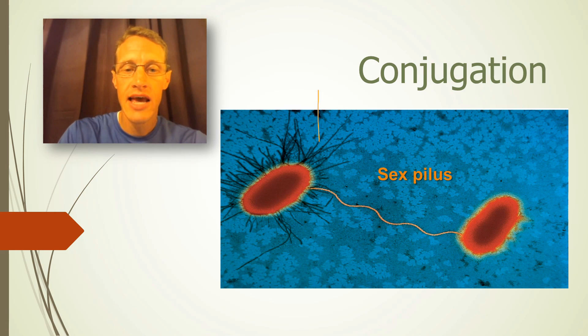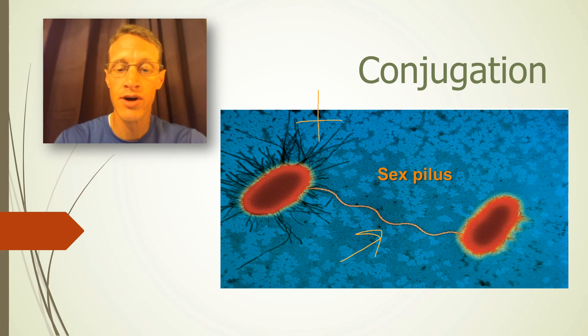In conjugation, a cell, which we label PLUS, has the ability to make a mating bridge called a sexpillus with another bacteria that can't make sexpilli, which we label MINUS. A sexpillus is basically like a little tube.